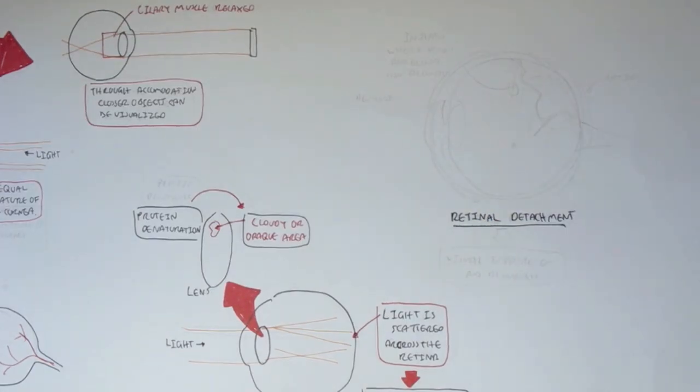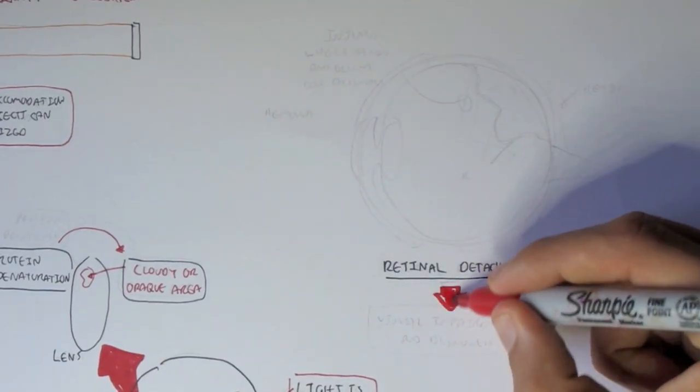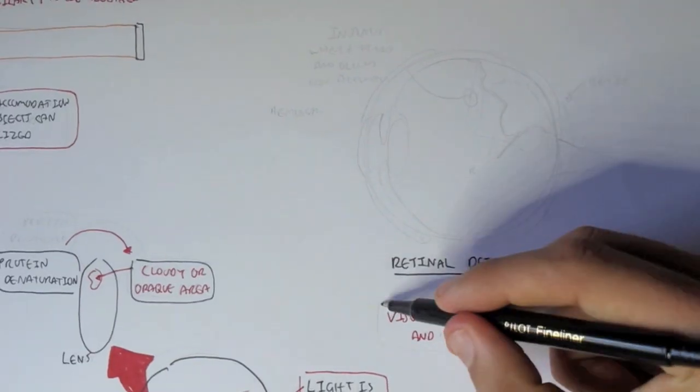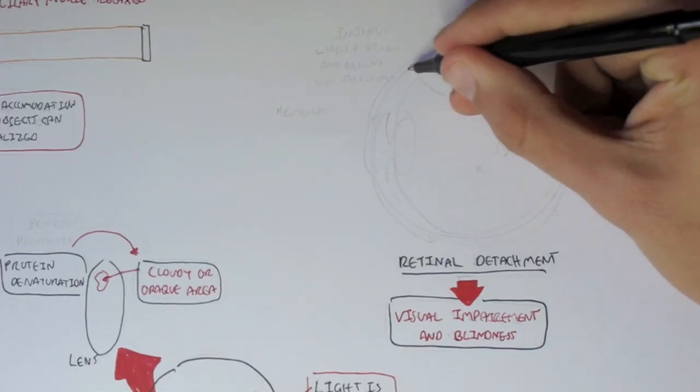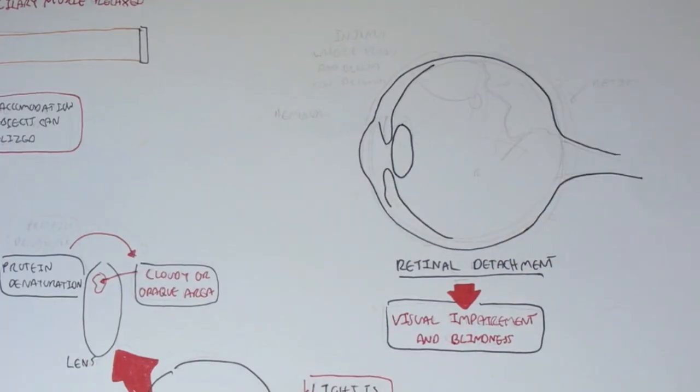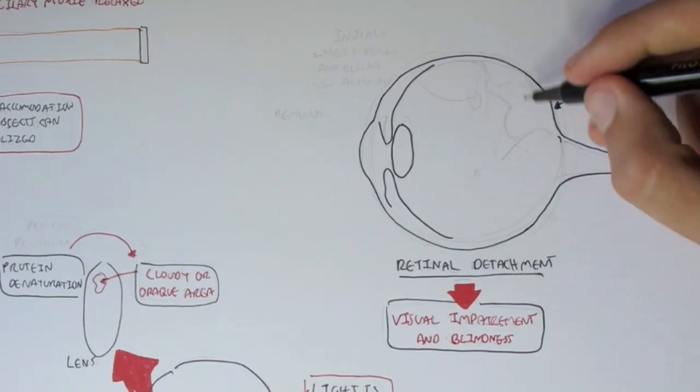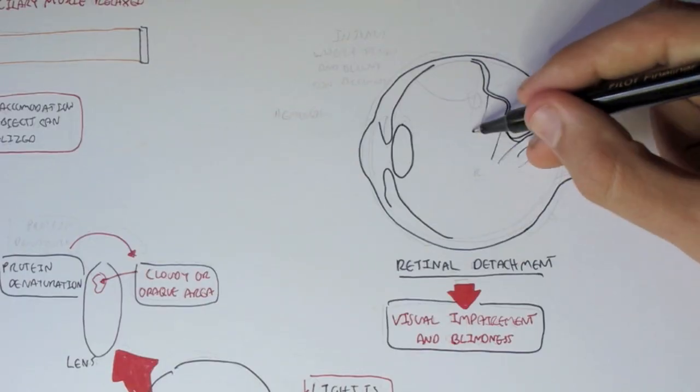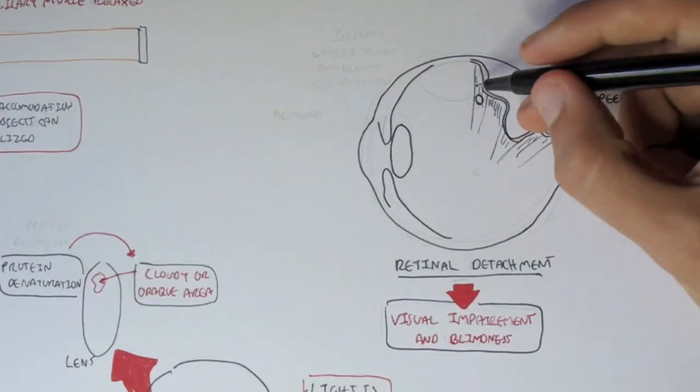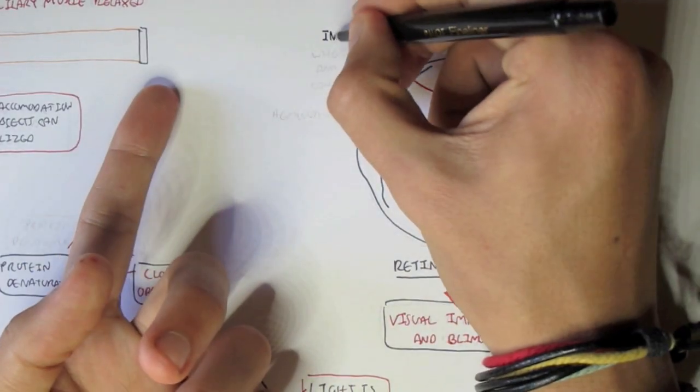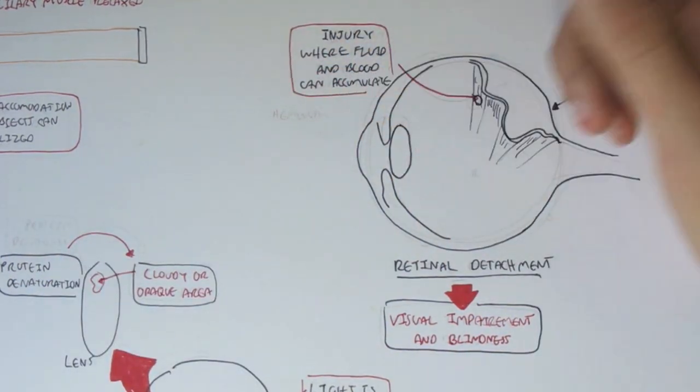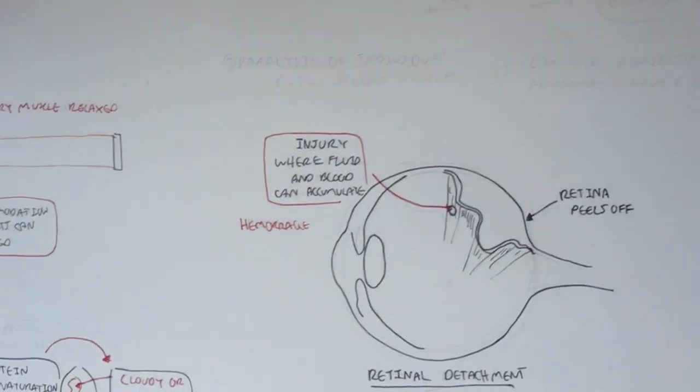Retinal detachment is another condition that causes damage to the retina. And it can cause visual impairment and blindness as well. So, what is retinal detachment? Here we have the eye again, the lens, the ciliary muscles. Retinal detachment is essentially, the retina is located here. And retinal detachment is essentially when the retina basically peels off the back. So here, the retina is peeling off. And it can be caused by an injury where the fluid, the vitreous humor, can leak in. Or blood can accumulate here, which will peel off the retina from the back. Also, hemorrhage can cause this.